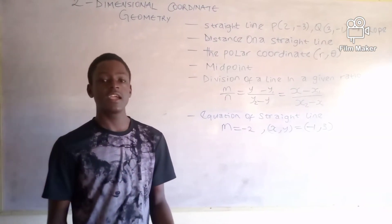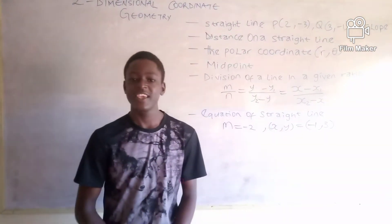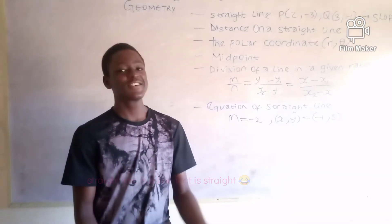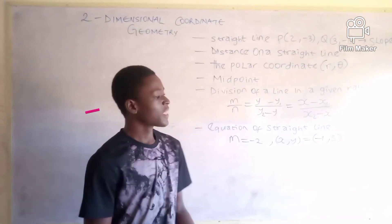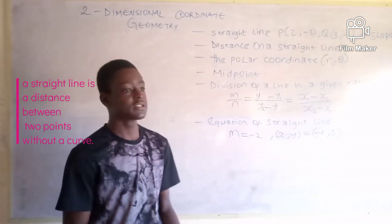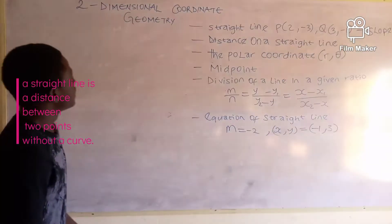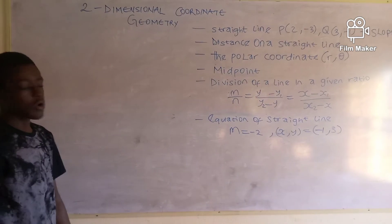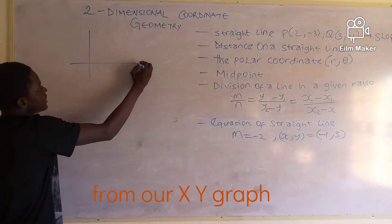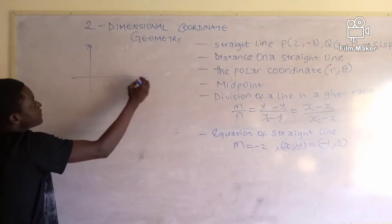When dealing with a straight line, a straight line is a line that is straight — it is the distance from one point to another point without a curve. From our x-y graph, let's say we have our x and y axes here.